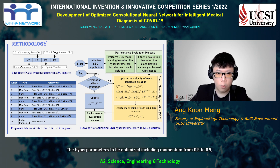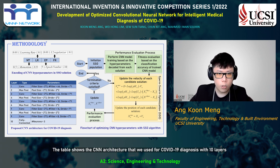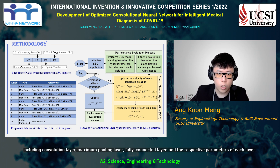The hyperparameters to be optimized include momentum from 0.5 to 0.9, learning rate from 0.01 to 0.1, EPO number from 5 to 10, and L2 factor from 0.01 to 0.1. The table shows the CNN architecture used for COVID-19 diagnosis with 10 layers, including convolution layers, max pooling layers, fully connected layers, and the respective parameters of each layer.